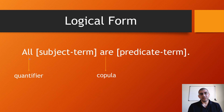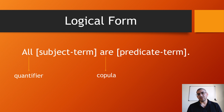In logical form, you're going to have a quantifier — which is 'all,' 'no,' or 'some' — followed by the subject term in brackets, then a copula, which is the verb 'to be,' and then the predicate term in brackets. That is putting something into logical form. We can see all the major elements of the proposition.